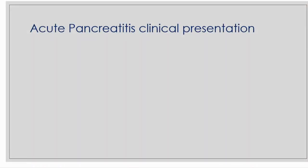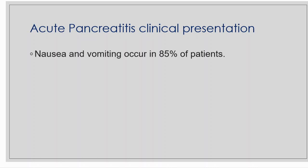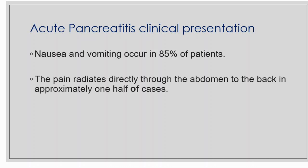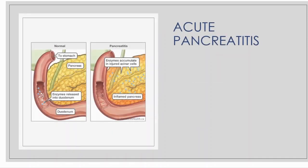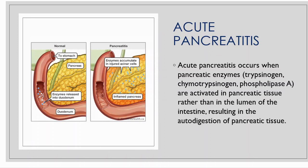Acute pancreatitis clinical presentation: nausea and vomiting is seen in 85% of patients, and abdominal pain radiates directly through to the back in approximately one half of cases. Tachycardia, which means abnormally fast heart rhythm, as well as hypotension, mild jaundice, and pleural effusion may also be found. Acute pancreatitis occurs when pancreatic enzymes are activated in pancreatic tissue rather than in the lumen of the intestine, resulting in autodigestion of pancreatic tissue.